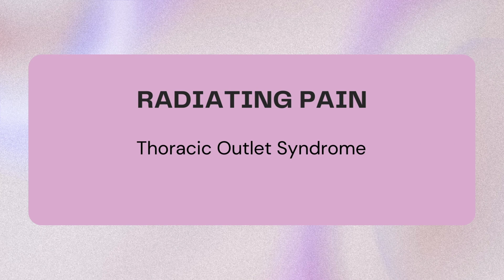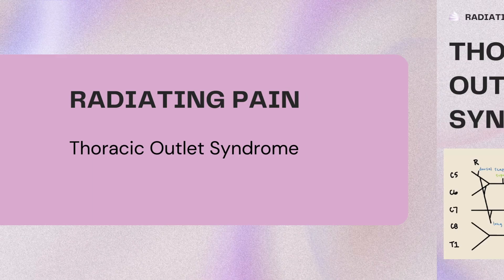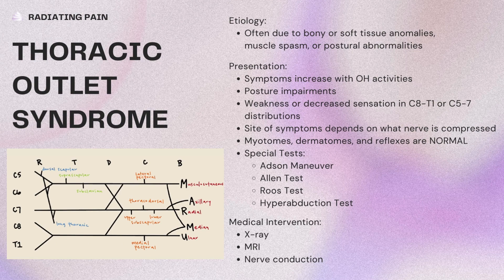The next category is radiating pain. Thoracic outlet syndrome falls under radiating pain — basically any kind of nerve-related pain. Thoracic outlet syndrome is characterized by numbness and paresthesia of the arm and hand, coldness or clumsiness of the hand, and arm numbness and a heaviness feeling. This is often due to bony or soft tissue anomalies, muscle spasm, or postural abnormalities. Symptoms can increase with overhead activities and posture impairments such as forward head, depressed shoulders, or elevated first rib. It would lead to weakness and decreased sensation in the C8 to T1 or C5 through C7 distributions depending on where the impingement is. The myotomes, dermatomes, and reflexes are normal because the true nerve roots are intact, but they're compressed somewhere after that nerve root.